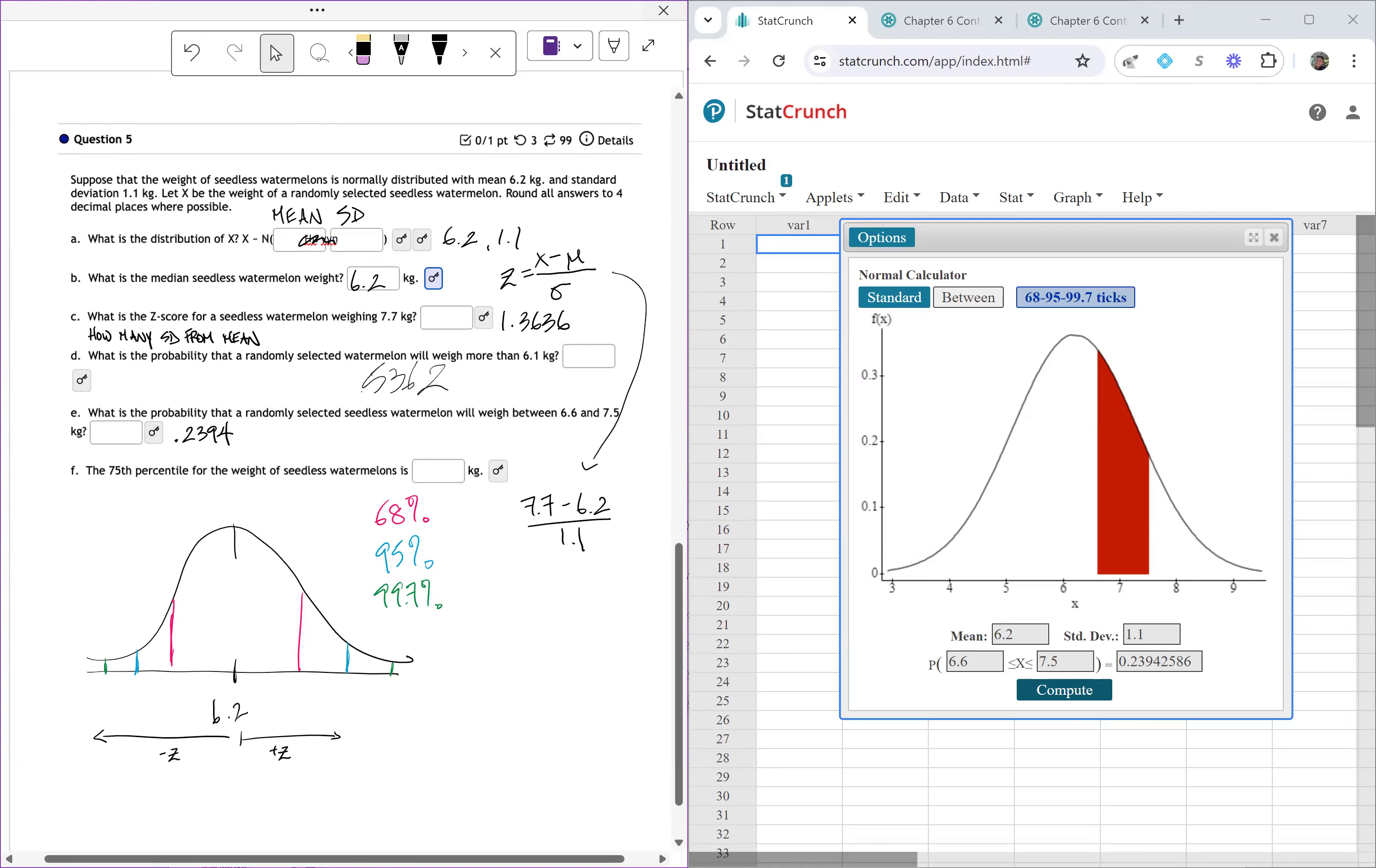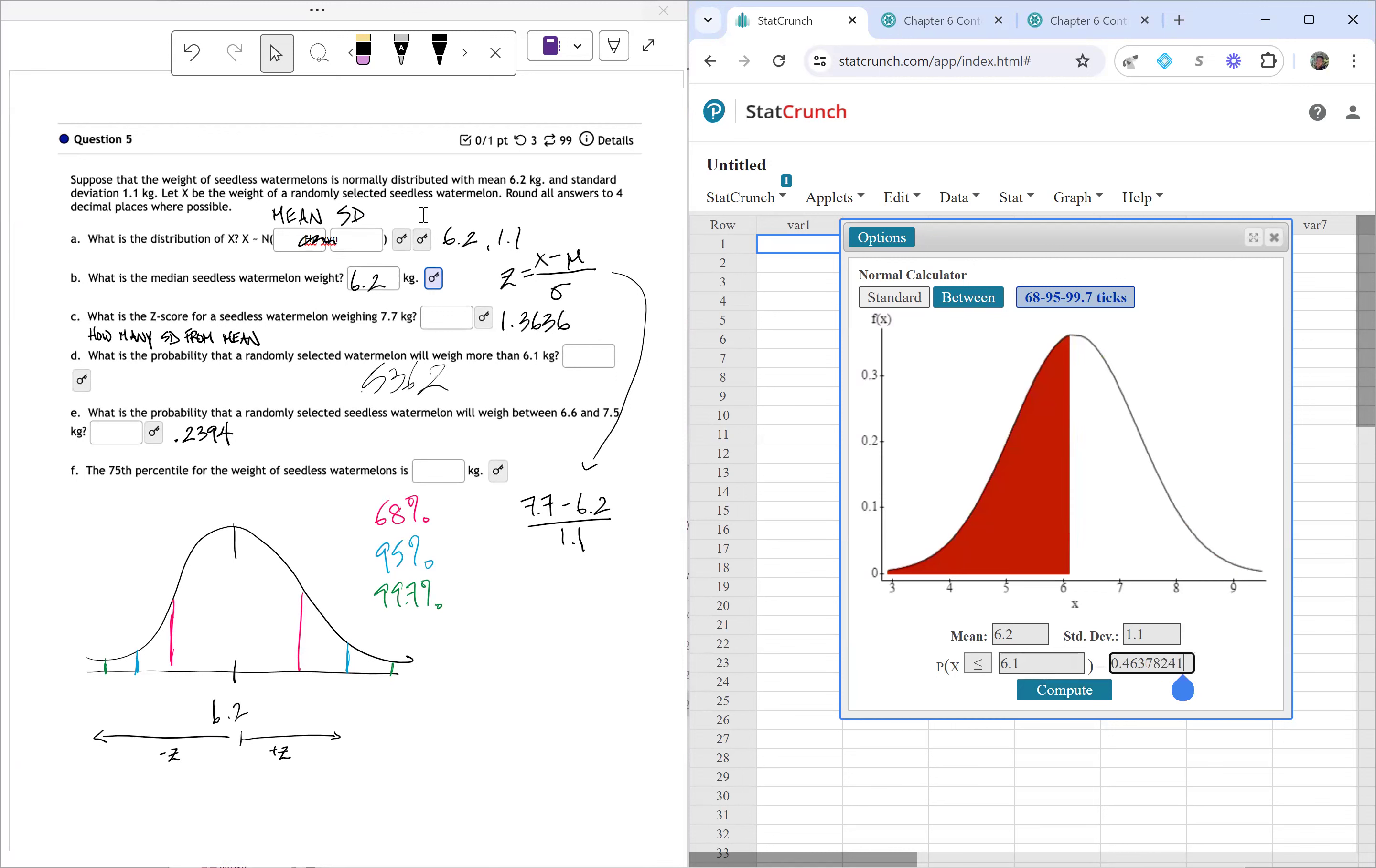Part F, the 75th percentile for the weight of a seedless watermelon is how many kilograms. Now at a specific percentile, I want to go back to the standard. So I want to know how many are less than or equal to, and I want to have 0.75. That 0.75 is the percentile that I'm looking for, right? So like 75% of things are less than that.